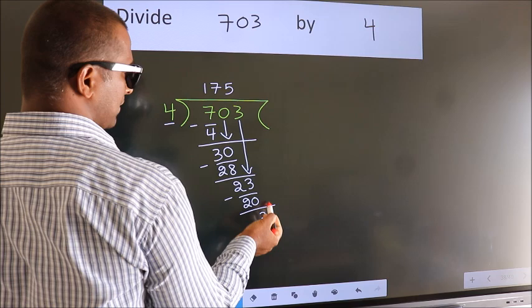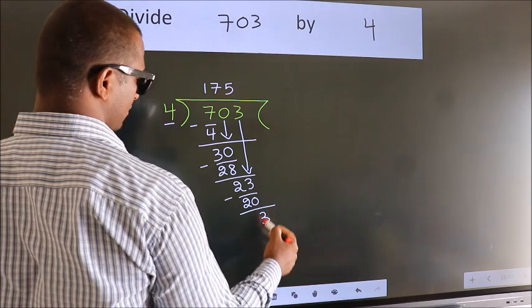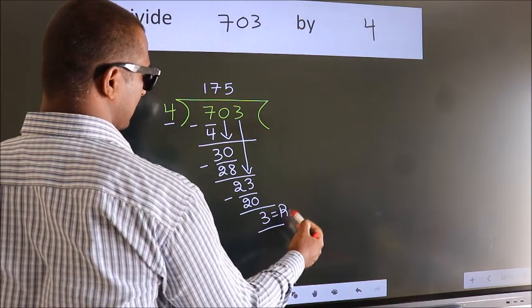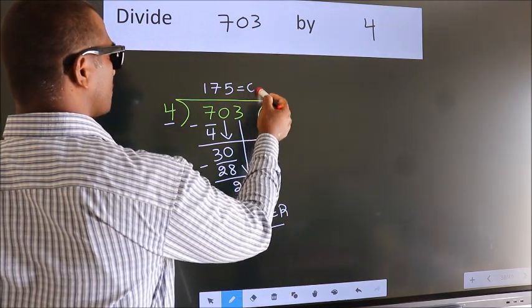No more numbers to bring it down. So we stop here. This is our remainder. This is our quotient.